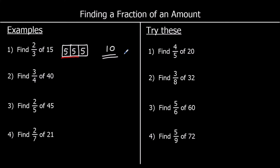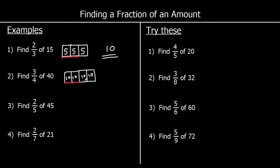For the second question, find three quarters of 40. So we're splitting 40 into four parts. 40 divided by four is 10. So each of the parts is worth 10 — each quarter is worth 10. We want three quarters, so three tens, and that is 30.